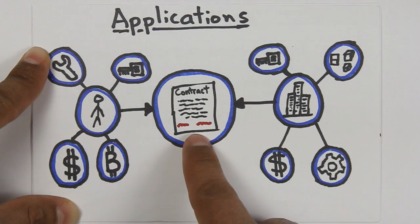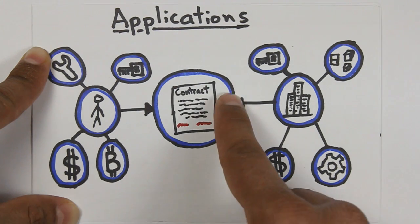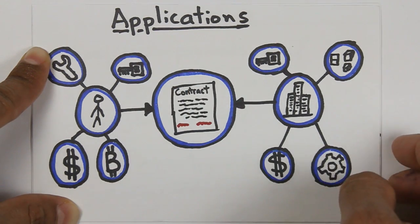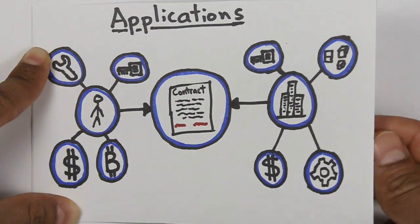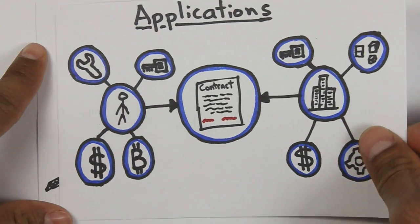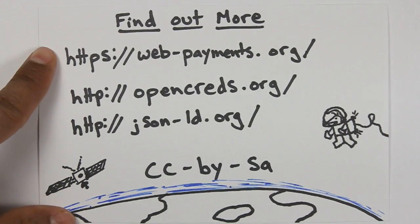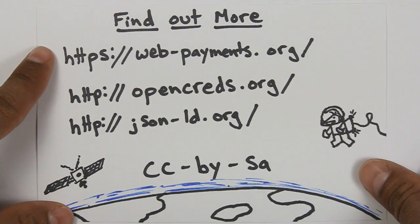And not only that, we can start executing digital contracts with one another purely over the web using technology that largely exists today. So as you can imagine, this has a variety of very interesting repercussions for things like web payments and credentials and licensing online. There are a number of groups that are working on this technology right now.